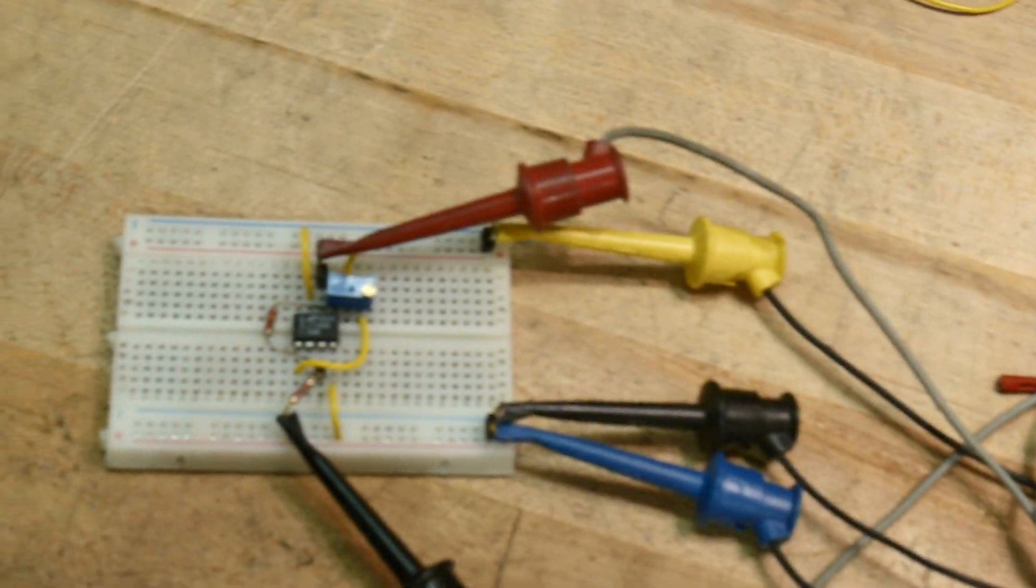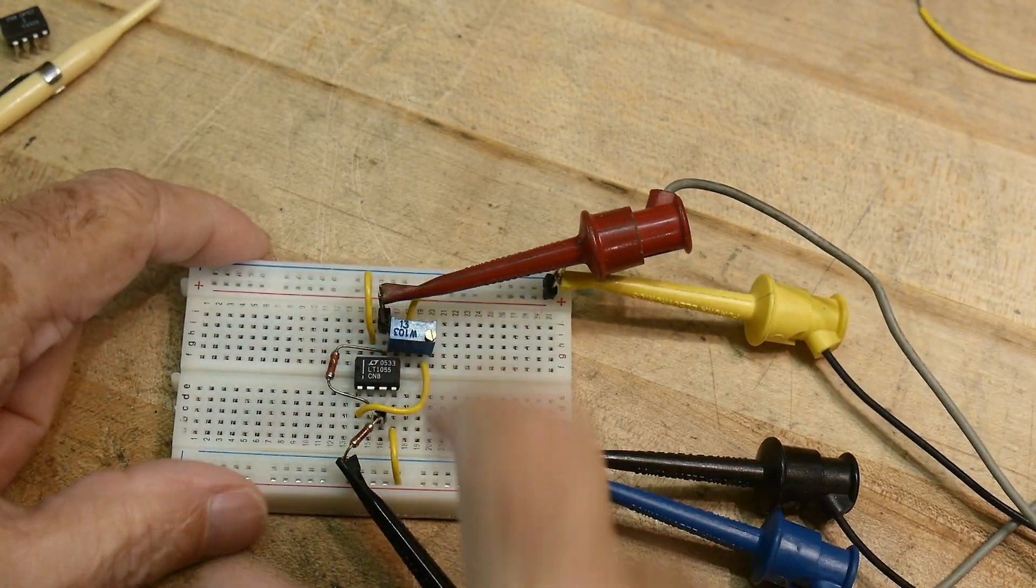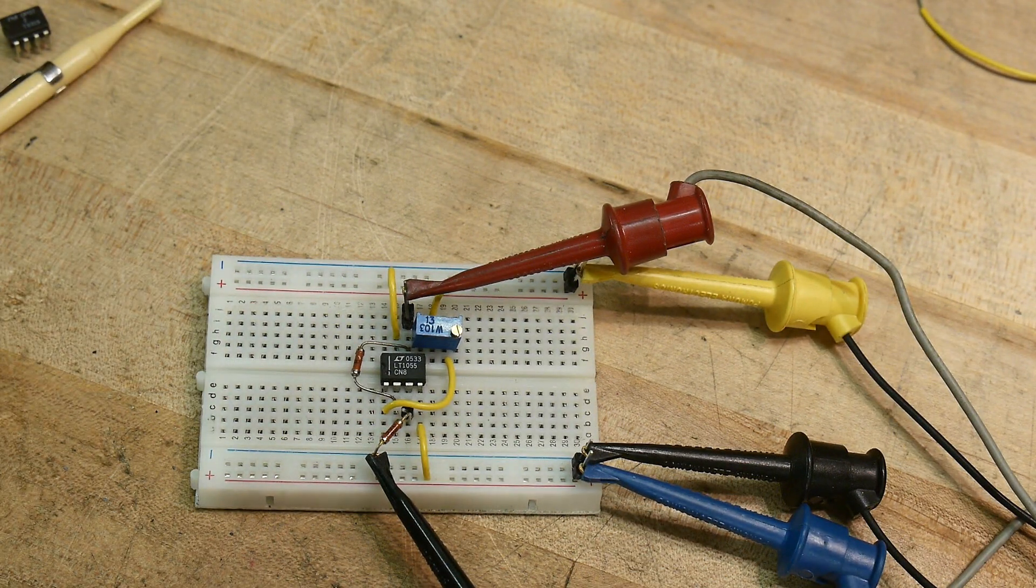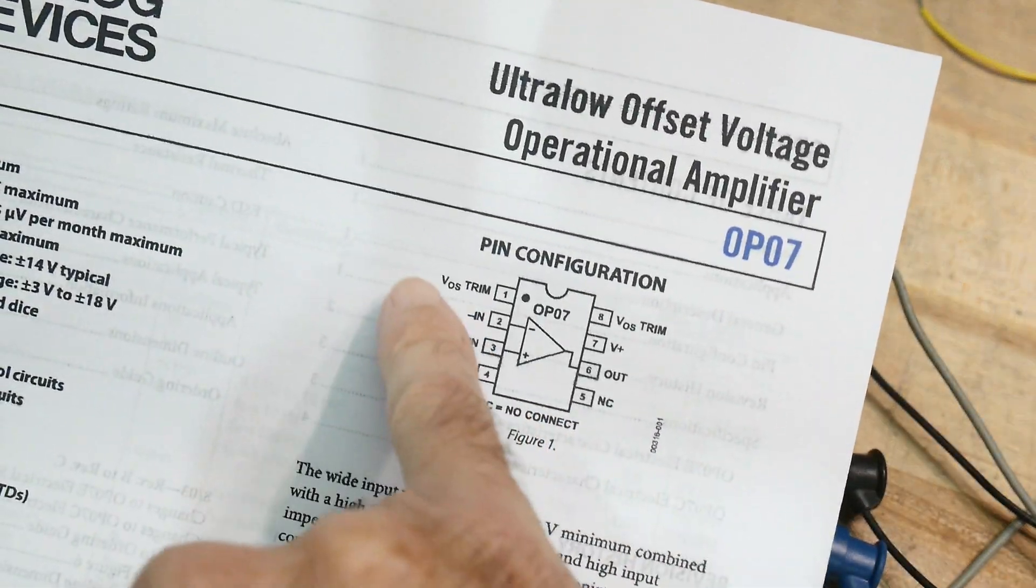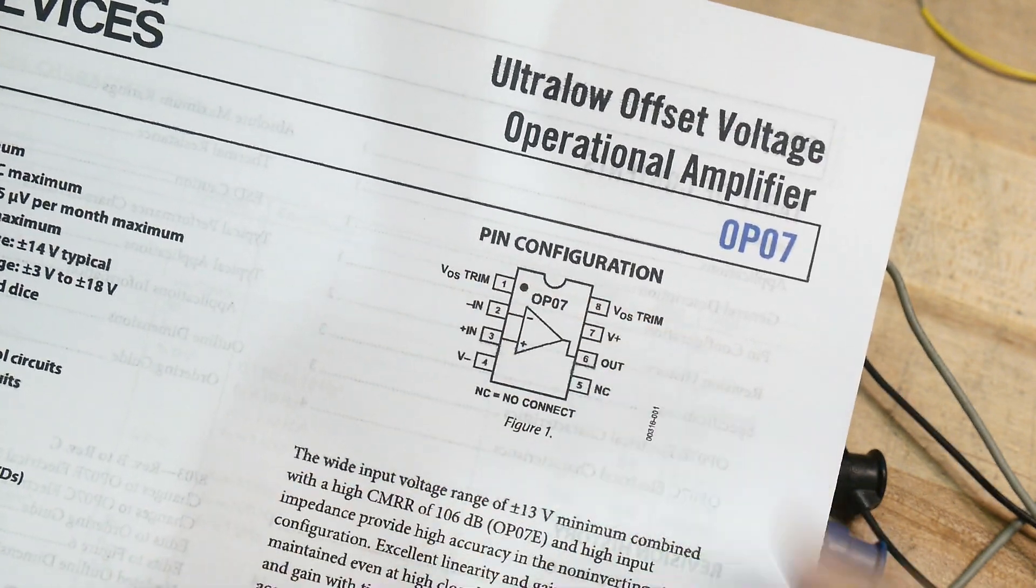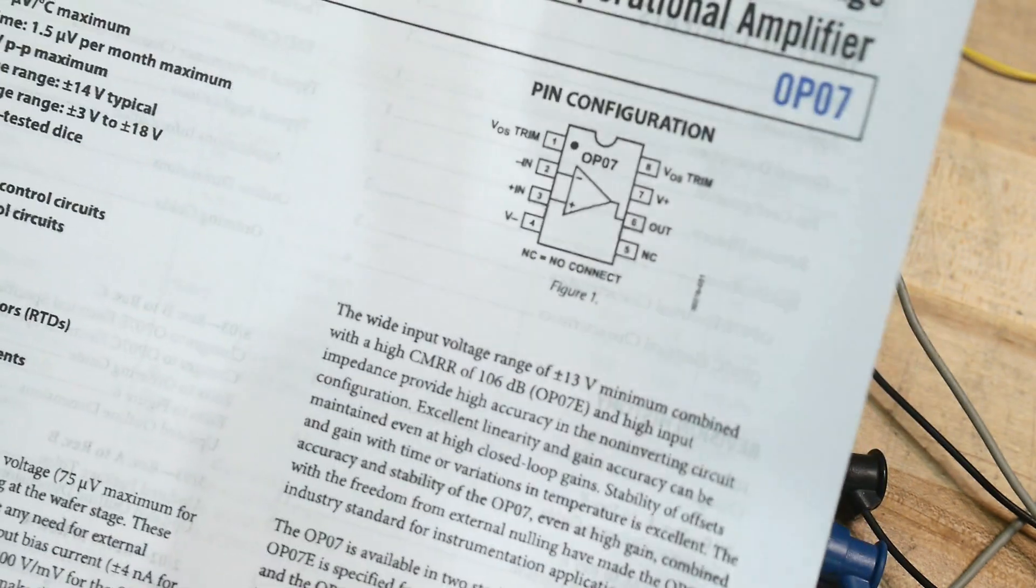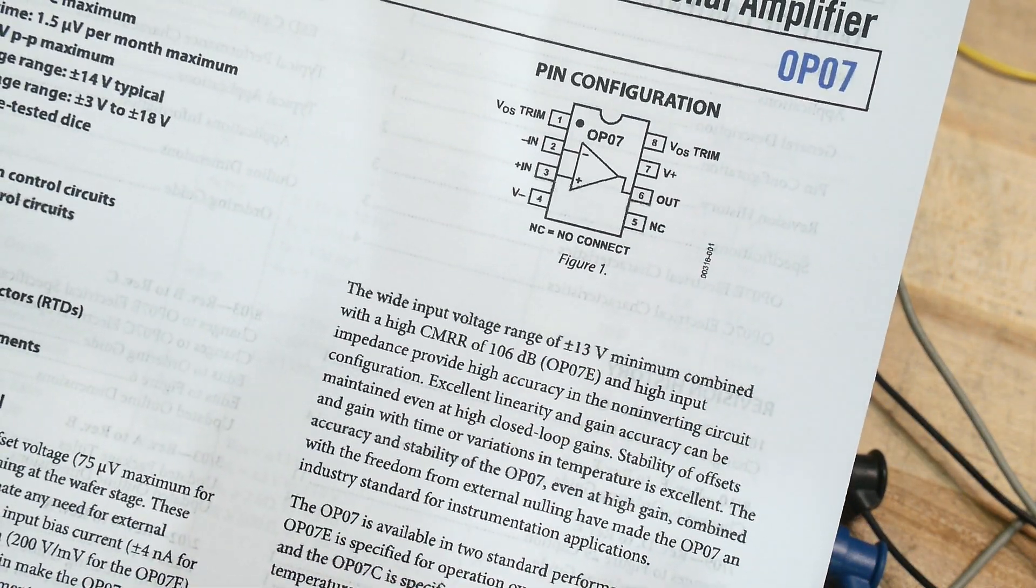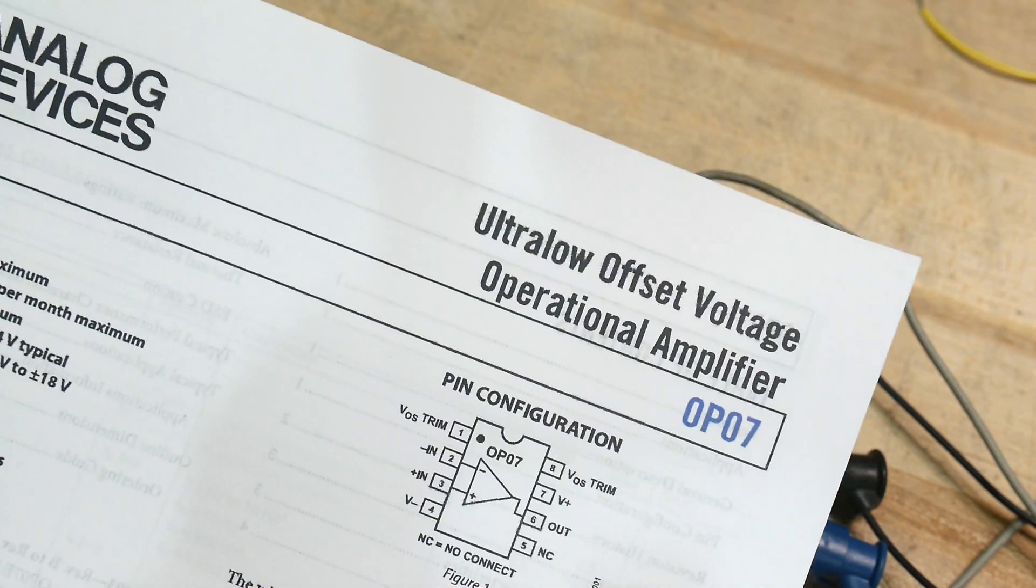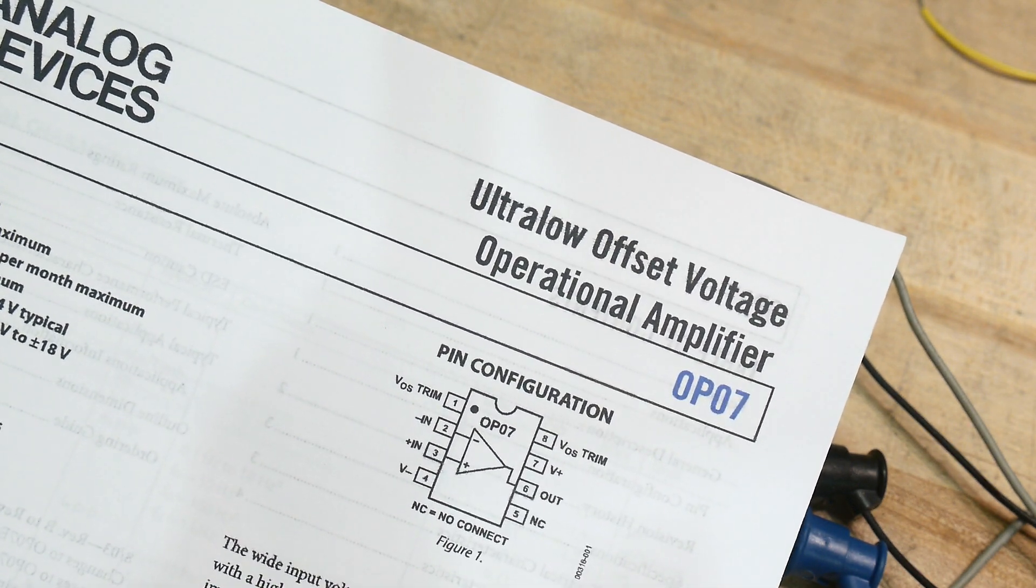So that's how we can use the offset null on an op-amp. You do need to add a part to do that. And even the OP07 has that adjustment. It has VOS trim, pins one and eight, which allows you to put a potentiometer across there and you can trim the OP07. So you can get it really, really good. Already 20 microvolts, but you can get it down even smaller than that. Now this is a discontinued part, so there are better op-amps than this even now. I think this was designed back in around 1980 or something.